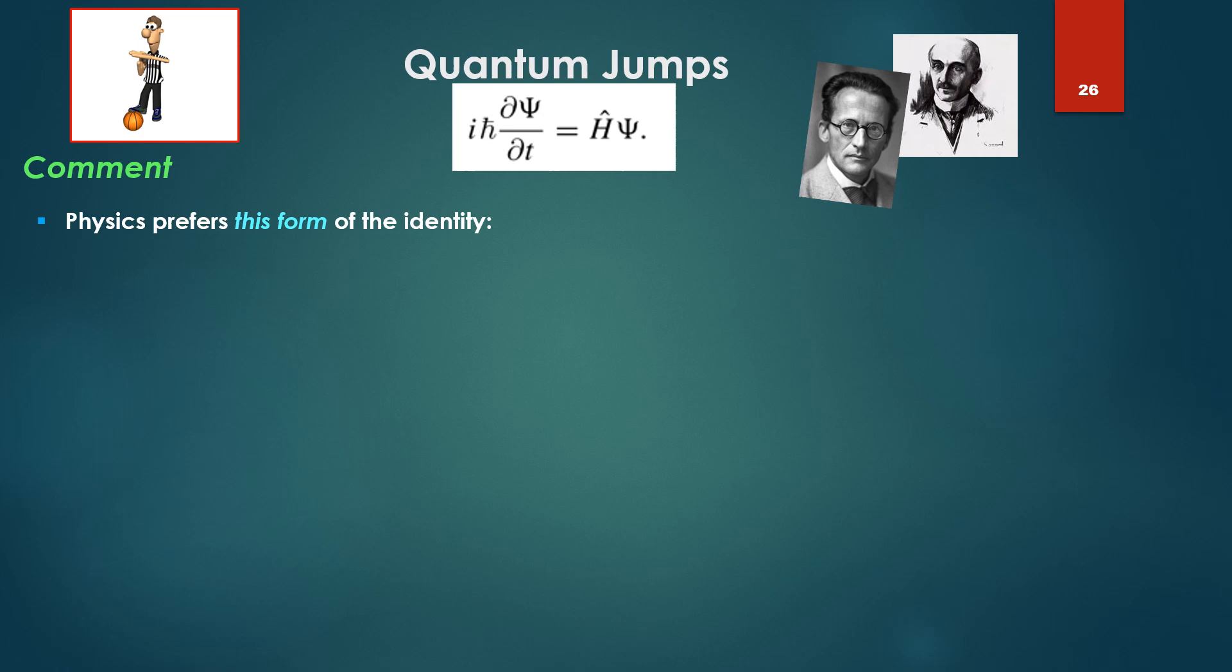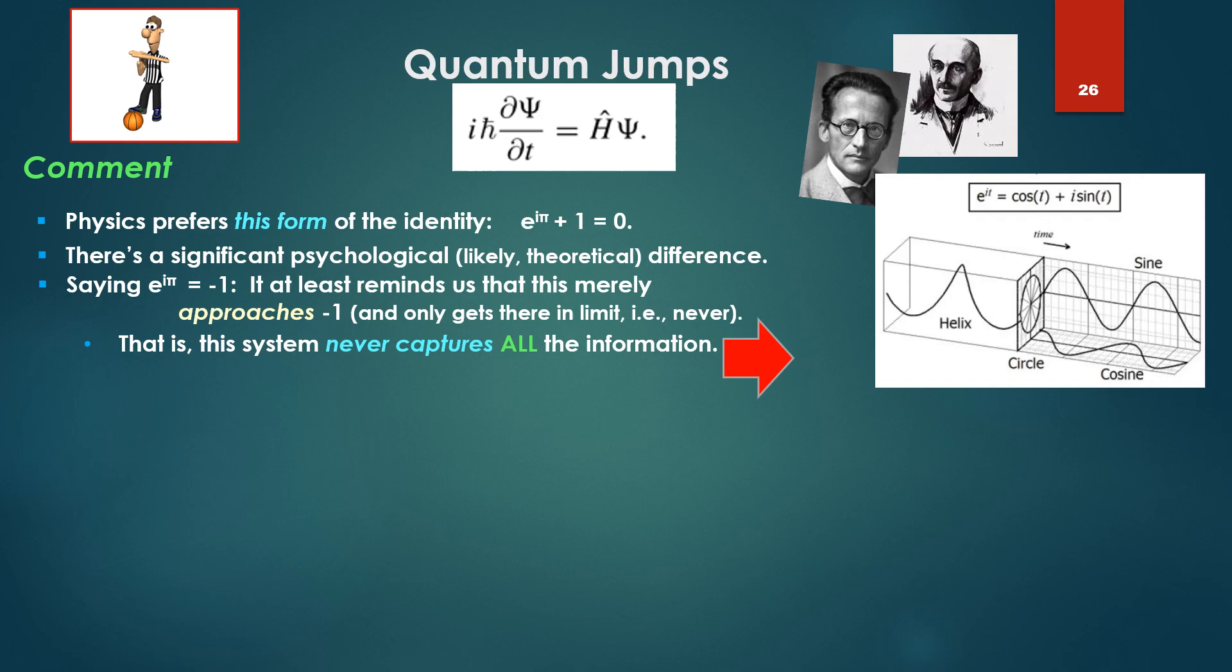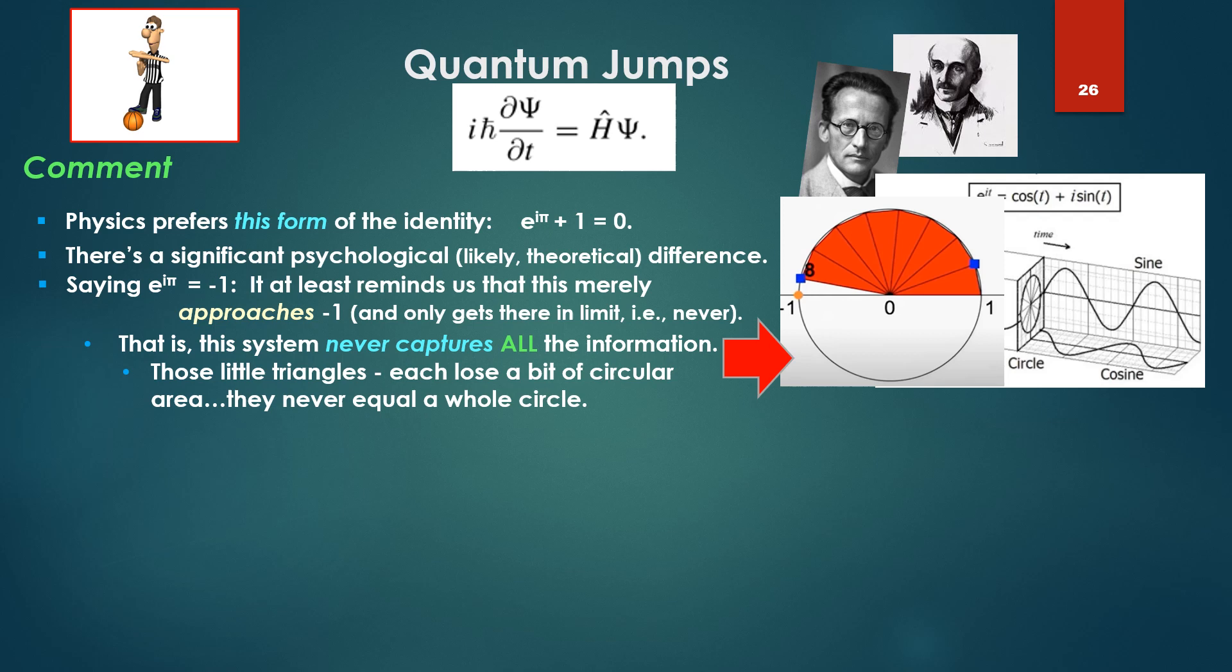Physics prefers this form of the identity: e^(iπ) + 1 = 0. Mathematically correct, but there's a significant psychological difference, I suspect, unlikely theoretical difference. Seeing e^(iπ) = -1 at least reminds us that this merely approaches minus 1 and only gets there in limit. That is, never. That is, the system never captures all the information. Those little triangles, each lose a bit of circular area. They never equal a whole circle. Nor can development over time simply be continually reset at zero, starting again from the same point over and over.